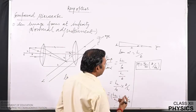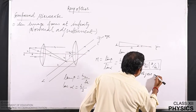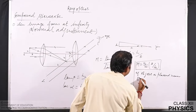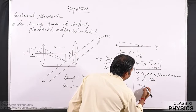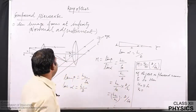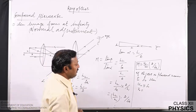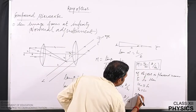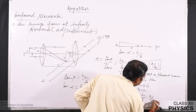If the object is placed nearer to f₀, then u₀ ≈ f₀, and if the image is forming nearer to the eyepiece then v₀ can be taken as l. Substituting these factors into the expression gives m = (l/f₀) × (d/fₑ). This is the magnification obtained for the compound microscope when the image forms at infinity.